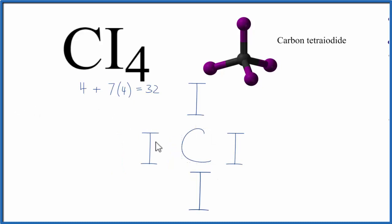Next, we'll put a pair of valence electrons between each of the two atoms here to form chemical bonds. We've used 8 valence electrons, we have 24 more left. Let's put those around the iodines and complete the octets.